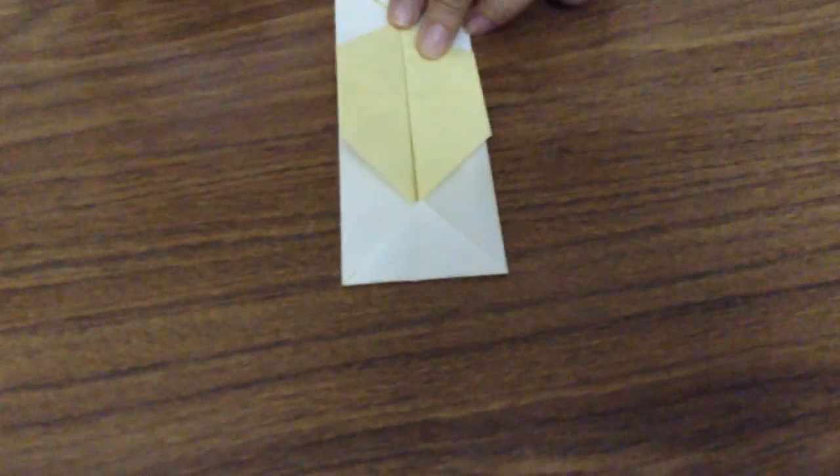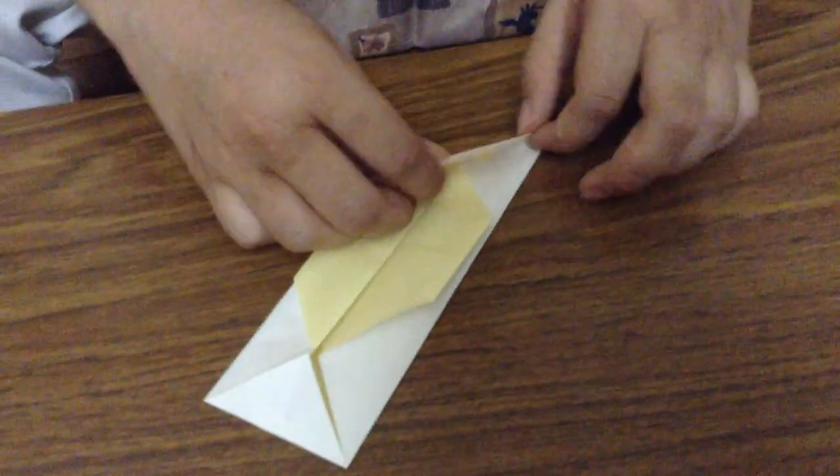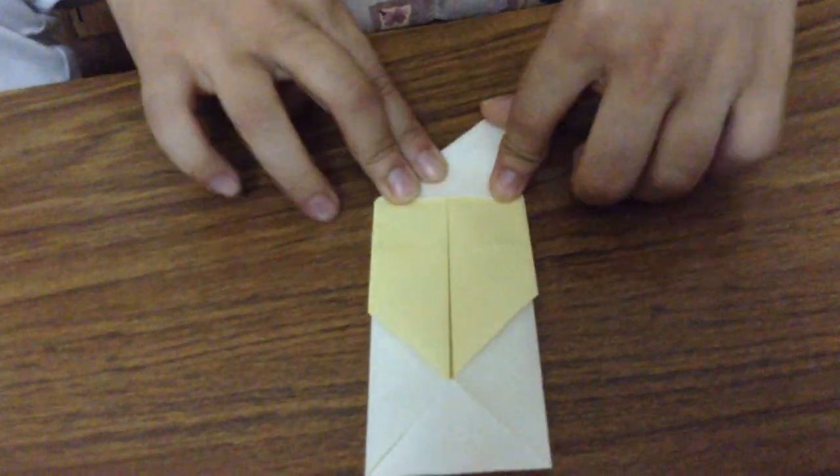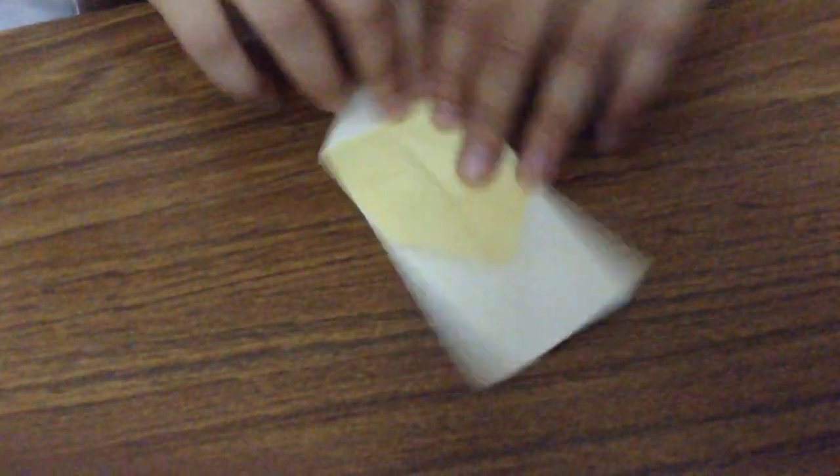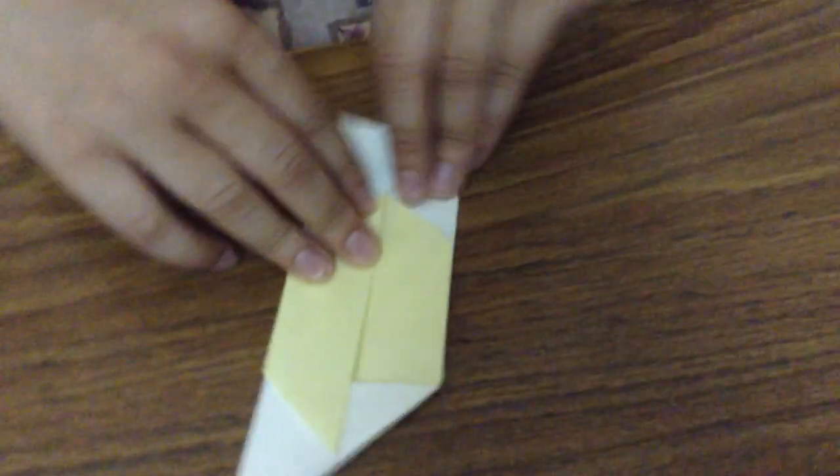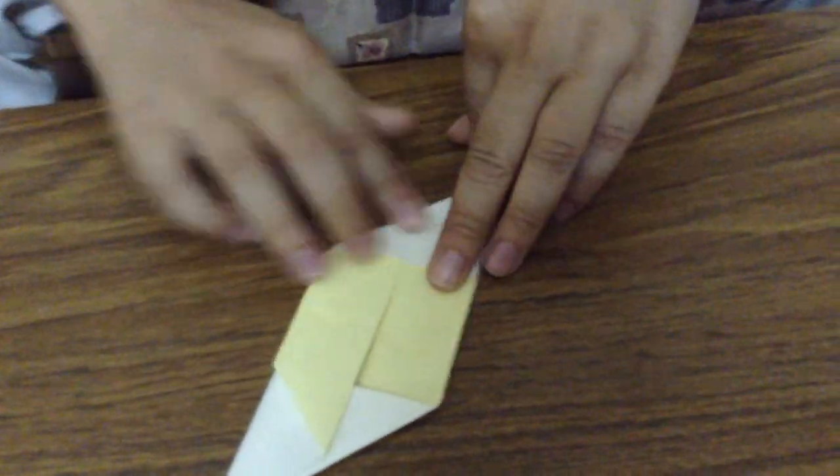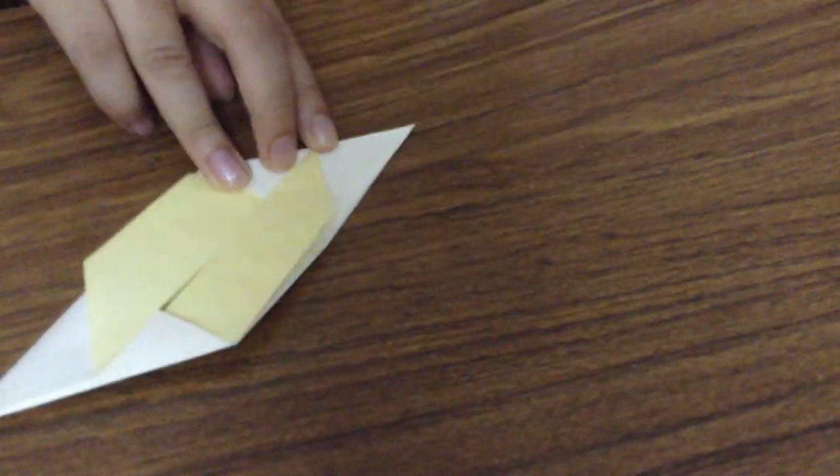Now what you need to do is fold the bottom right corner up to like this. And then you lift this flap up and tuck it in like that, and you turn it around 180 degrees. Do the same thing.